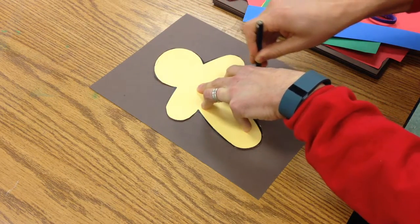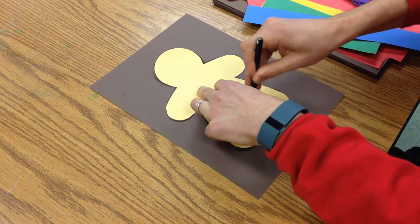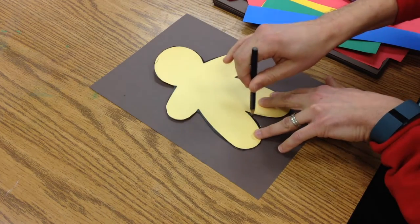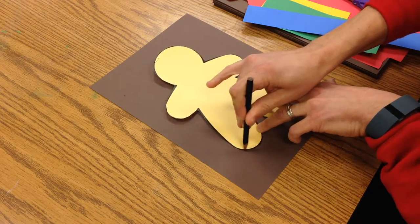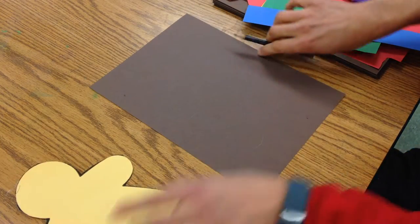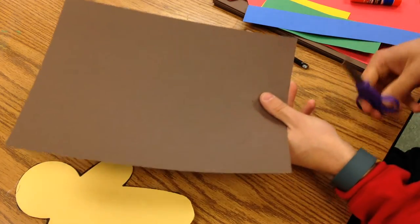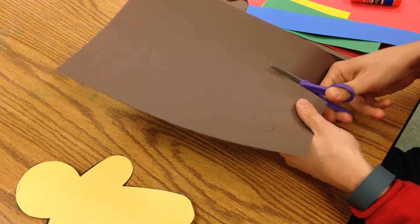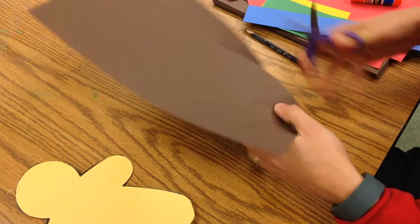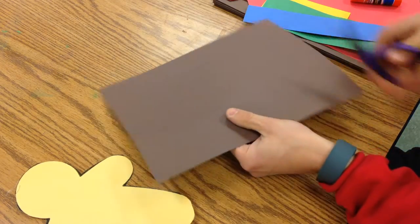You just set that aside and take your scissors and cut on the line. There's no rule that says you have to cut it all out in one cut.